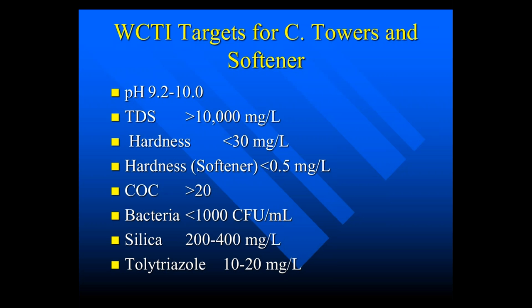The target parameters they want to achieve are: pH 9.2 to 10, total dissolved solids over 10,000, hardness less than 30 mg/L in the tower, hardness at the softener less than 0.5 mg/L, over 20 cycles of concentration. For bacteria their goal is less than 1,000 colony forming units per milliliter. Silica target is 200 to 400 mg/L for mild steel corrosion inhibition, and tolytriazole 10 to 20 mg/L as the copper corrosion inhibitor.